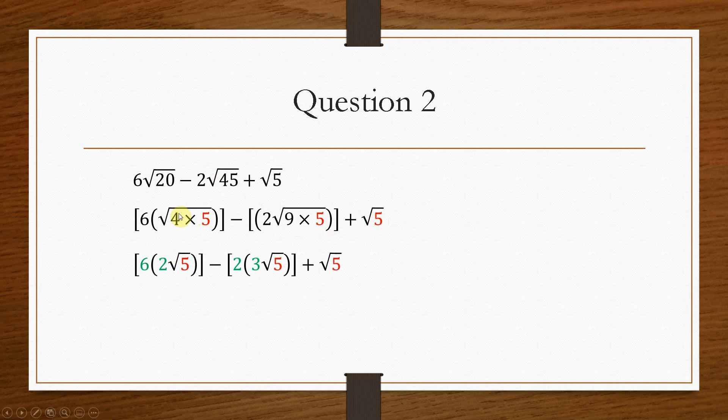So when we simplify that, the root 4 will give us 2, and the root 9 will give us 3. So then what we can do is reincorporate this number, so the 6 and then the minus 2, back into the surd.